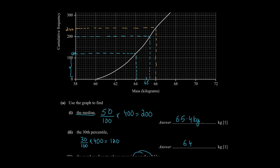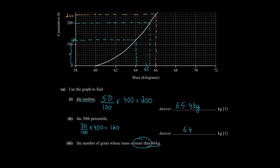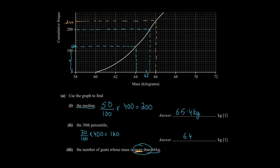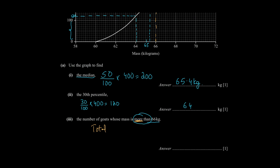The corresponding value of 66 is 240. Now what the question is asking us is the number of goats whose mass is more than — emphasis on the word 'more'. This 240 means 240 gourds have a mass of 66 or less. Since the question is asking for more than, we subtract: total minus 240. Total is 400, so 400 minus 240 gives us 160. So the answer for this part is 160.